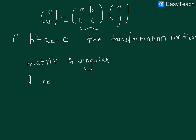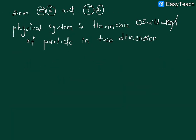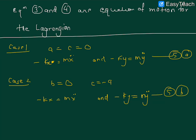So if the condition B squared minus AC equals zero holds, then the transformation matrix is singular and we can reduce the Lagrangian by a point transformation. This question is long but opens up various concepts. I hope the solution is clear — thank you for watching.